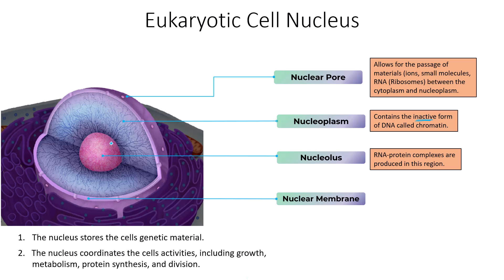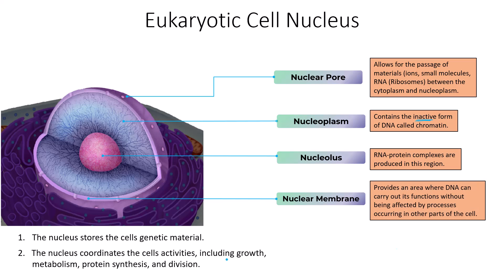The nucleolus would be this really dense core inside of the nucleus. RNA protein complexes are produced in this region — specifically ribosomes — which would be made in the nucleolus and then would leave the nucleus through these nuclear pores. The nuclear membrane provides an area where DNA can carry out its functions without being affected by processes occurring in other parts of the cell. It creates a compartment where nuclear processes can happen without the risk of being denatured by other metabolic processes within the cytoplasm.